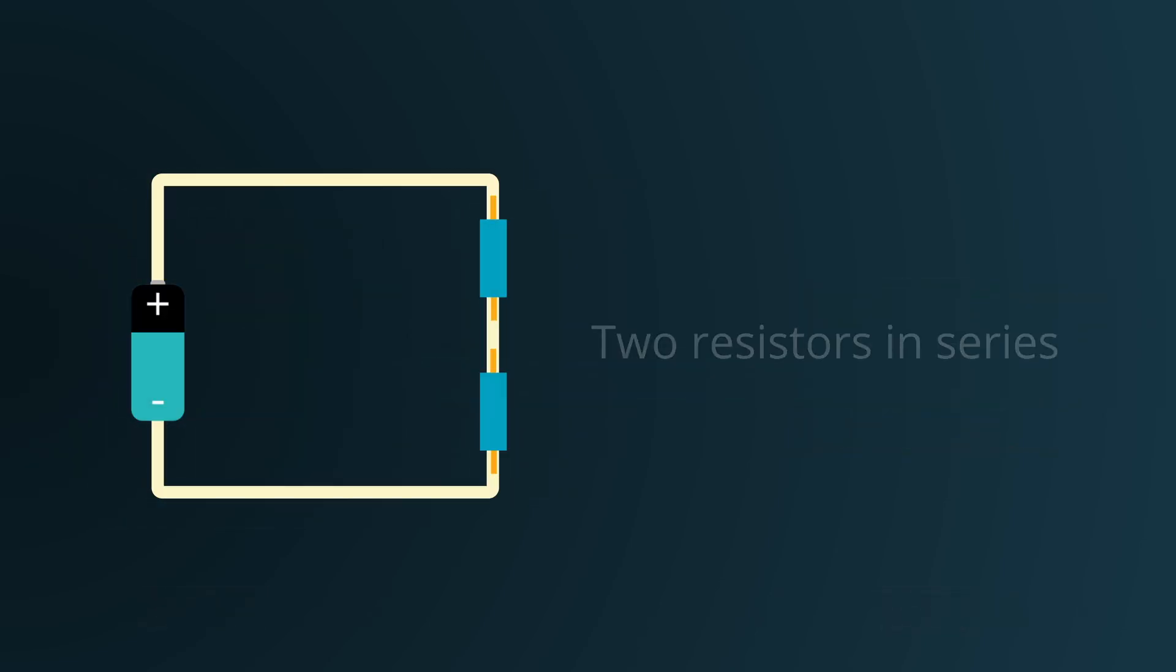At its essence, a voltage divider is just two resistors in series. In our setup, we have two resistors R1 and R2, each with a resistance of 6 ohms. When the battery voltage is applied across this combination, current begins to flow through these resistors.